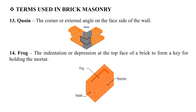The Quoin is the corner of the external angle on the face side of a wall. When a wall is constructed at a corner, that corner is called the Quoin.